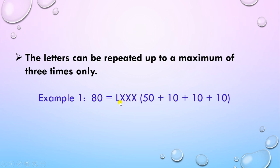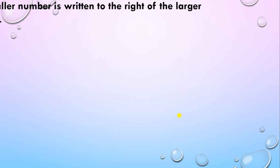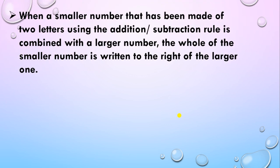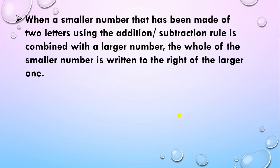L stands for 50 and X stands for 10. When a smaller number made of two letters using the addition or subtraction rule is combined with a larger number, the whole of the smaller number is written to the right of the larger number.